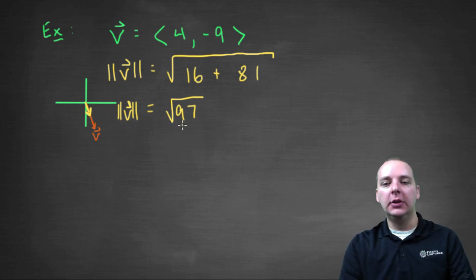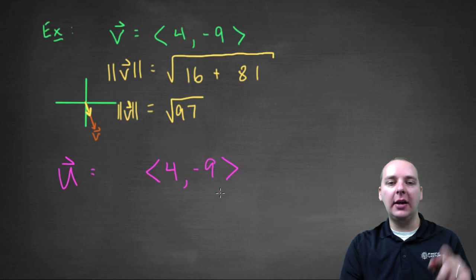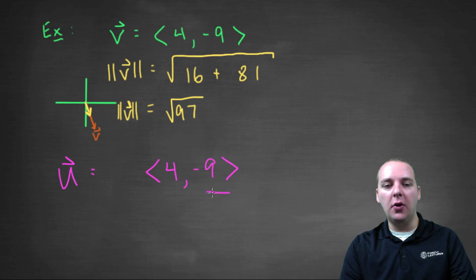So to get our vector, our unit vector, we'll call it vector u, we're going to take the vector four comma negative nine, and we're going to divide all of its components by root ninety-seven. Now you can either write this over root ninety-seven, which is okay, that's not bad.